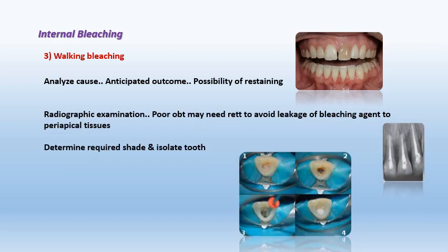I must assess the tooth itself by radiographic examination. I will examine the periapical status of the tooth and the endodontic treatment. I must make sure there is no apical pathosis. Any poor endodontic treatment must be re-treated to avoid leakage of bleaching agents to the periapical tissues. Since bleaching agents are very caustic, if they reach the periapical or periodontal tissues, it will lead to severe inflammation, necrosis of the periodontal ligament, or external root resorption.